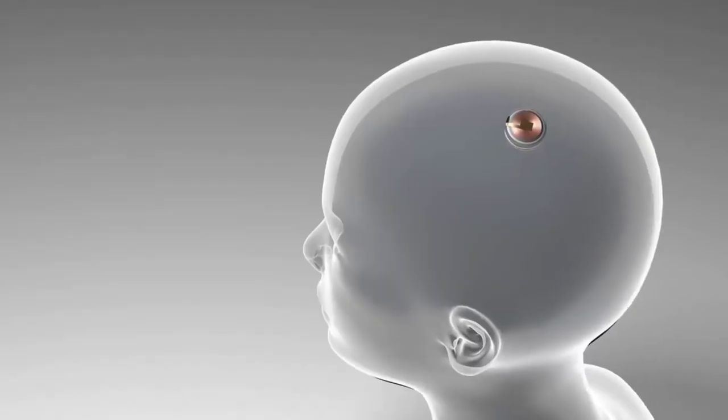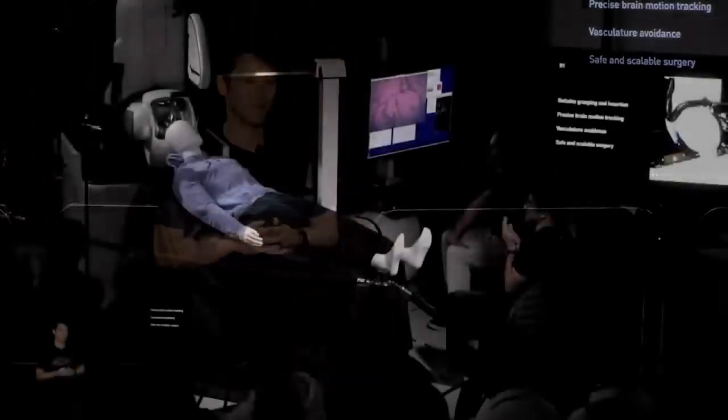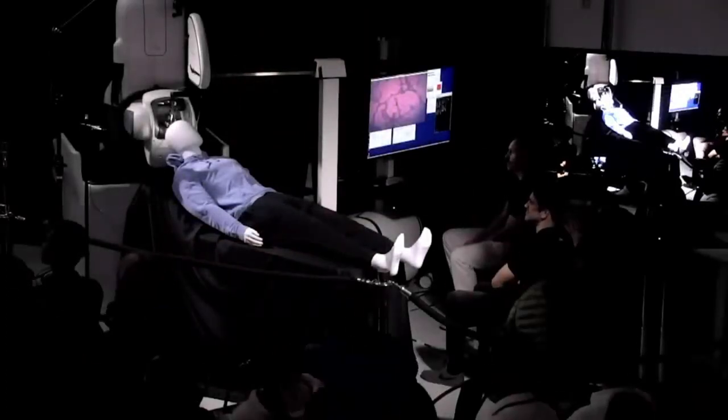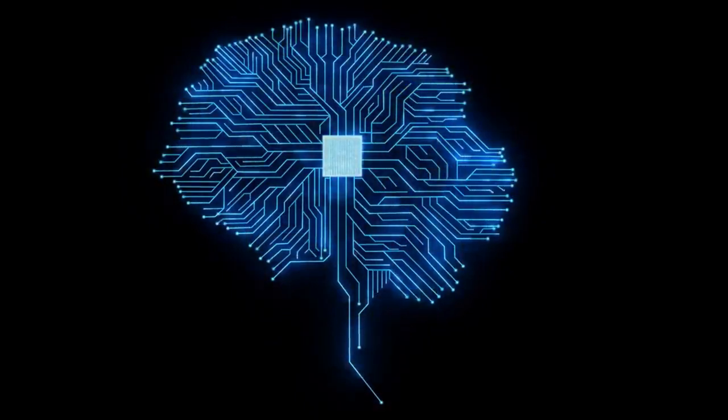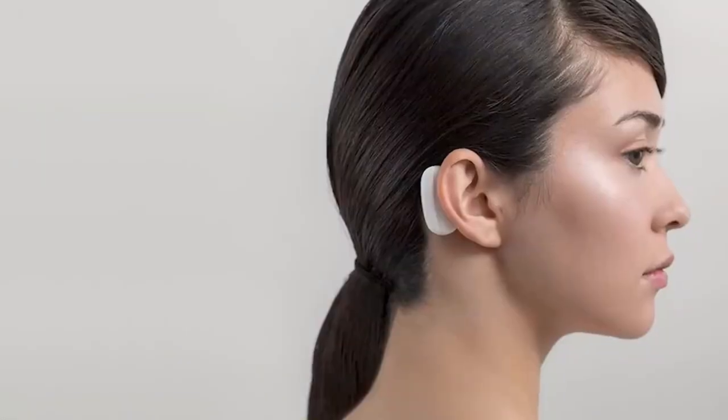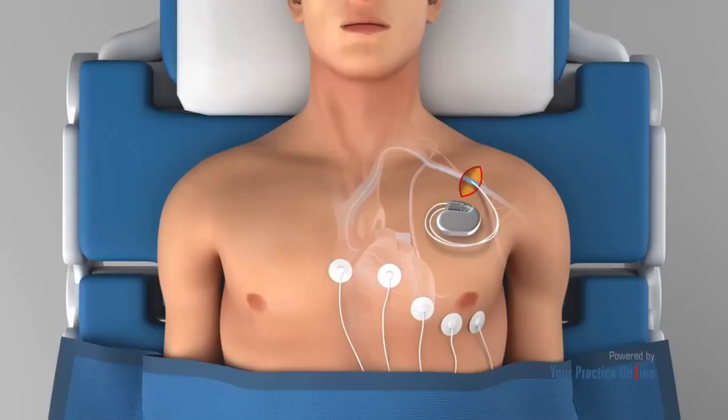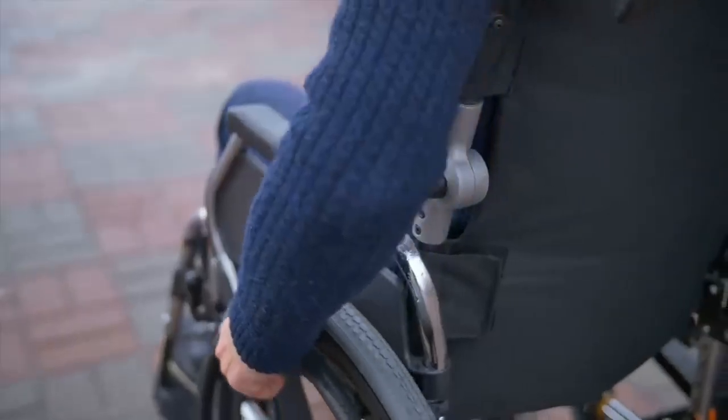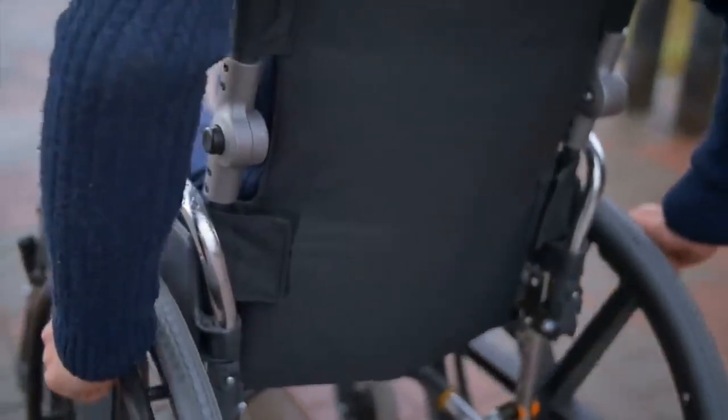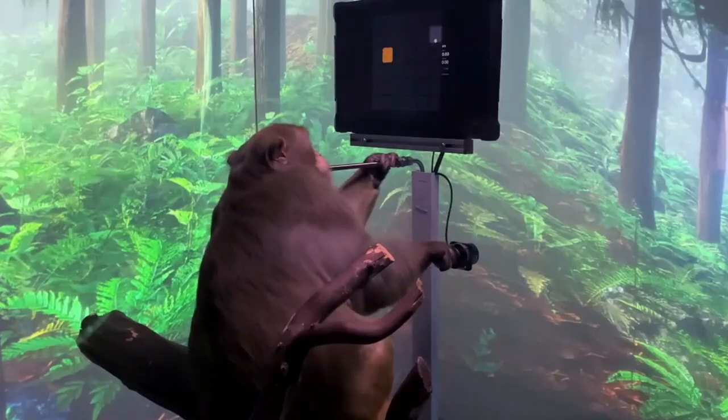And we've been working hard to be ready for our first human. And obviously, we want to be extremely careful and certain that it will work well before putting a device in a human. But we've submitted most of our paperwork to the FDA. And we think probably in about six months, we should be able to have our first neural link in a human.